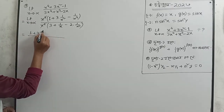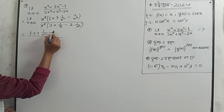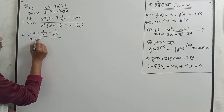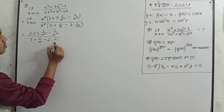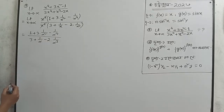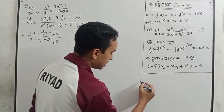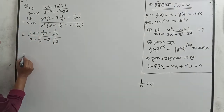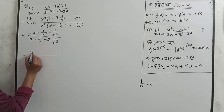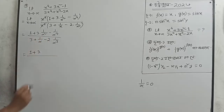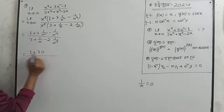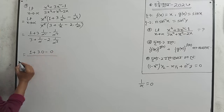We get 1 plus 3 times (1/infinity) squared minus (1/infinity) to the power 4, divided by 3 plus (1/infinity) minus 2 times (1/infinity) to the power 3. We know that 1 by infinity is 0.